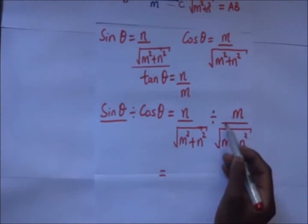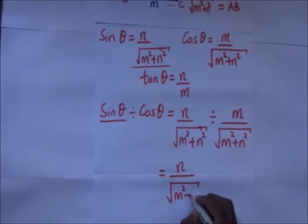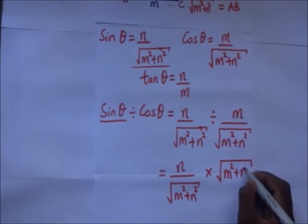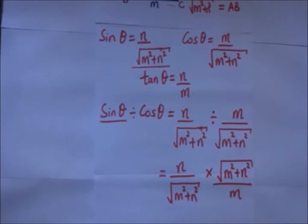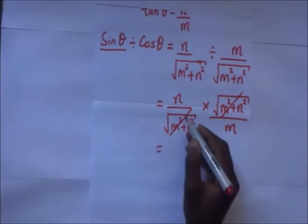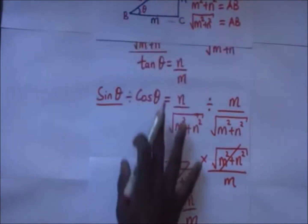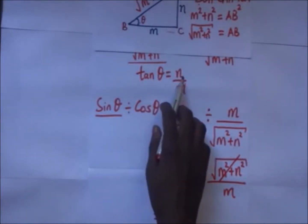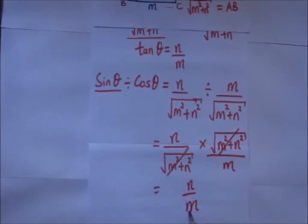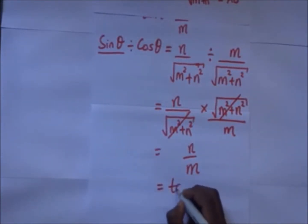Where there is division of fractions, we find the reciprocal. So it becomes N over the square root of M squared plus N squared, multiplied by the square root of M squared plus N squared over M. The square root terms cancel, and you remain with the answer N over M. But remember that N over M, as we had done earlier, is tan theta. So when we divide sine theta by cos theta, we end up with N over M, which is equivalent to tan theta.